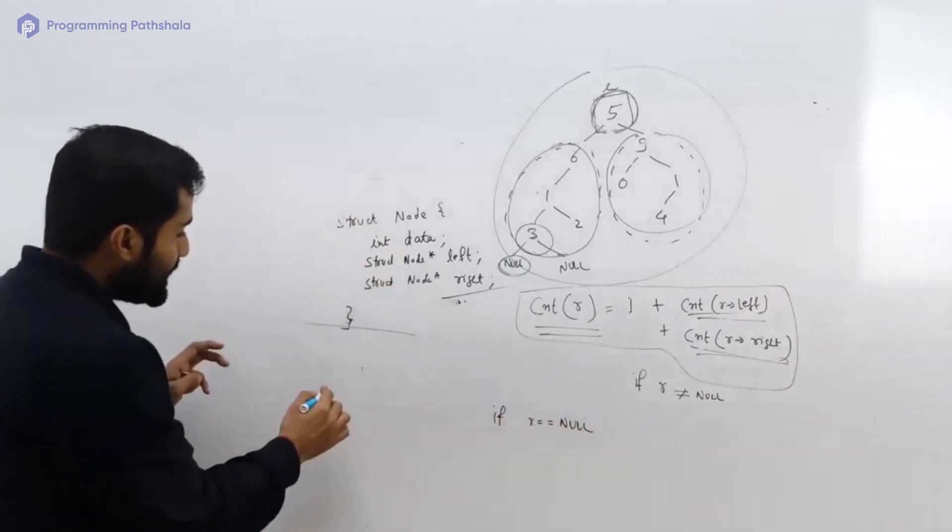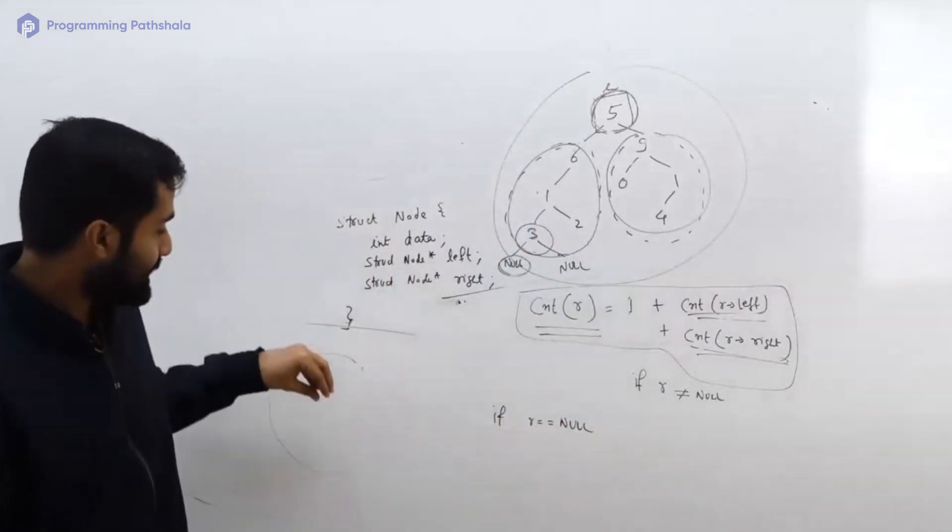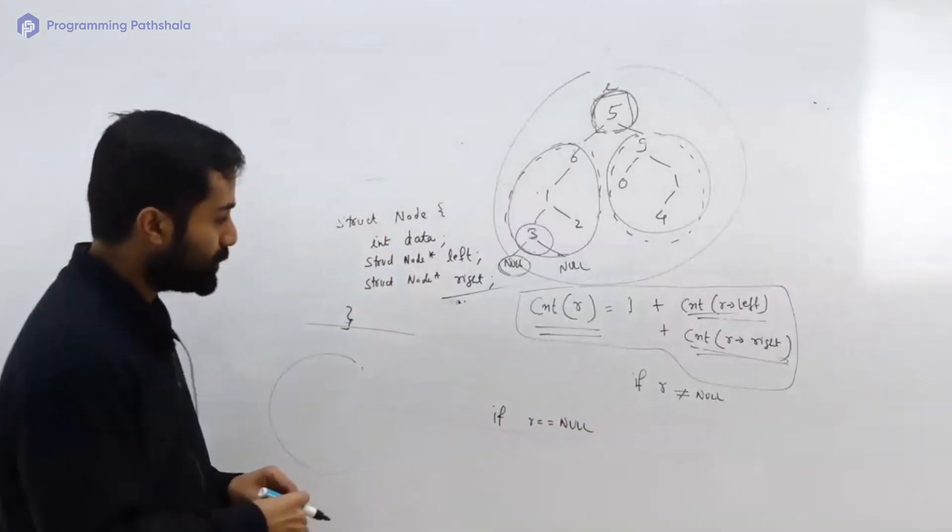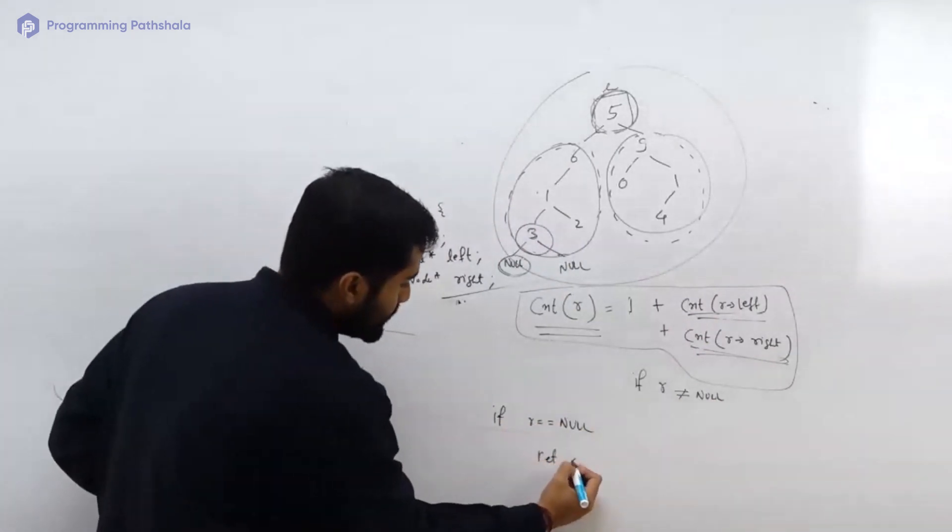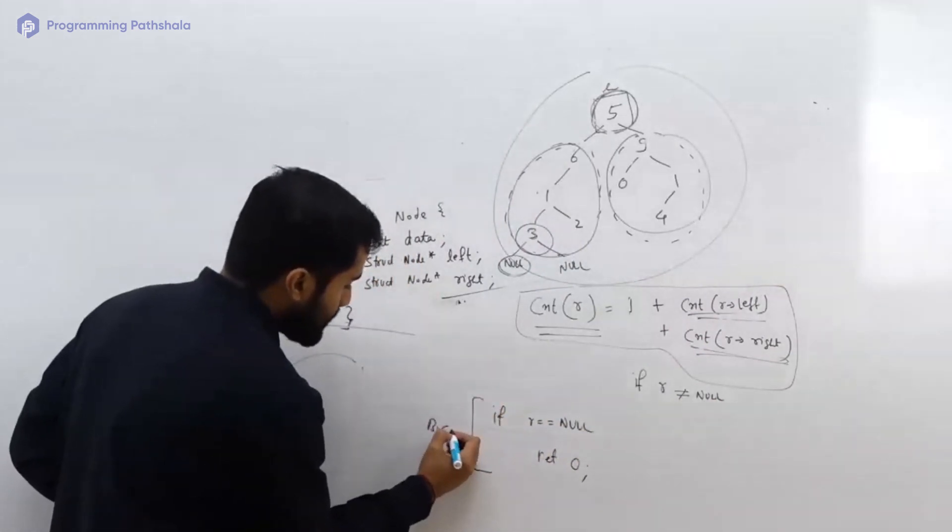It means that its root would be null. So if the root is null, then the number of nodes would be zero. So in that case you should return simply zero. So this is your base case.